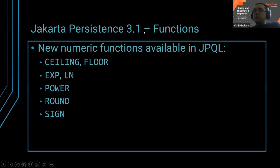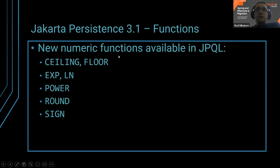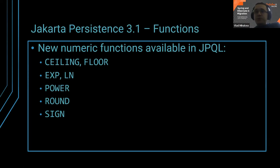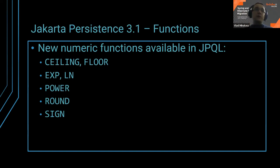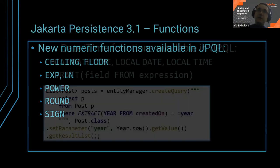Jakarta Persistence 3.1 also adds new mathematical functions: ceiling, floor — useful for arithmetic operations — as well as exponential, power, round, and sign. If you're doing arithmetic operations, you can use those. The nice thing is these are available in JPQL and the Criteria API, so they get translated to the proper database-specific syntax. That's very nice.